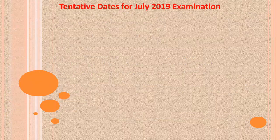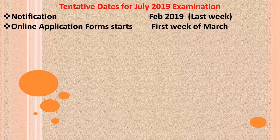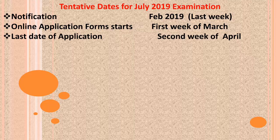Now let us see the key dates for the July 2019 examination. The notification will arrive in the last week of February 2019. Online application forms will start from the first week of March, and the last date for filling the application form will be the second week of April. The examination will be conducted in July 2019.